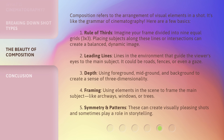Composition refers to the arrangement of visual elements in a shot. It's like the grammar of cinematography. Here are a few basics. 1. Rule of Thirds: Imagine your frame divided into nine equal grids (3 by 3). Placing subjects along these lines or intersections can create a balanced, dynamic image. 2. Leading Lines: Lines in the environment that guide the viewer's eyes to the main subject — it could be roads, fences, or even a gaze. 3. Depth: Using foreground, mid-ground, and background to create a sense of three-dimensionality. 4. Framing: Using elements in the scene to frame the main subject, like archways, windows, or trees. 5. Symmetry and Patterns: These can create visually pleasing shots and sometimes play a role in storytelling.